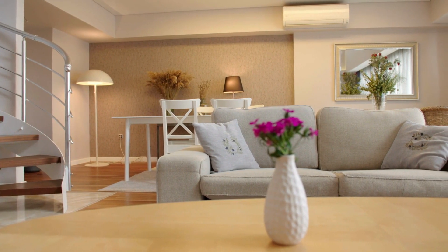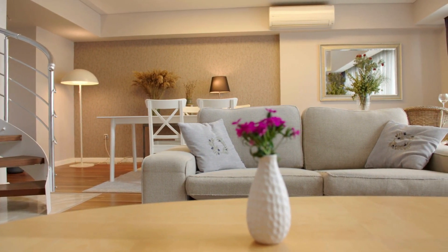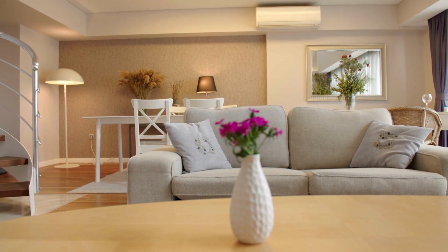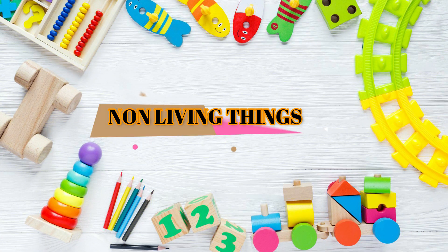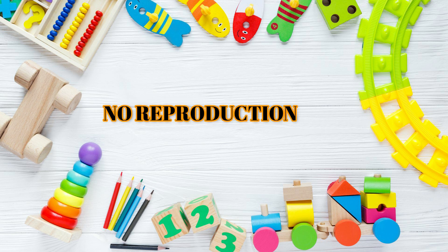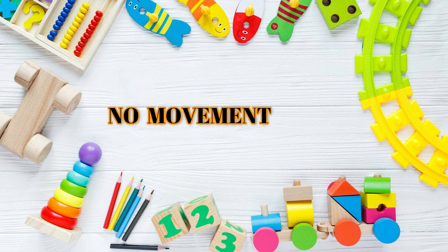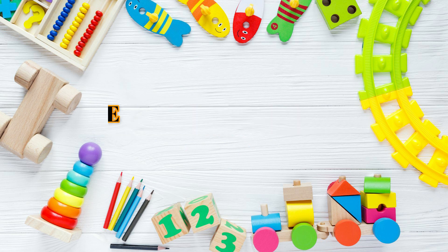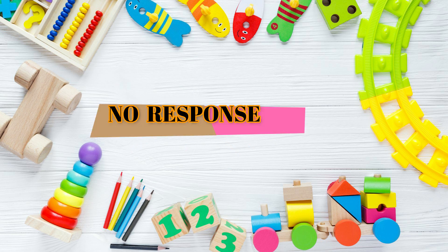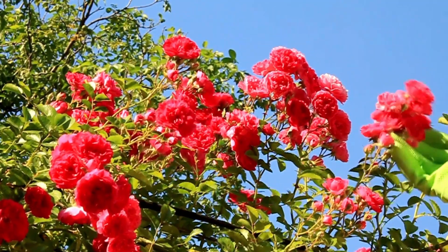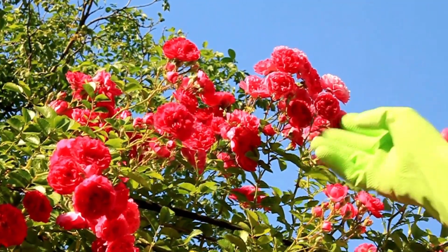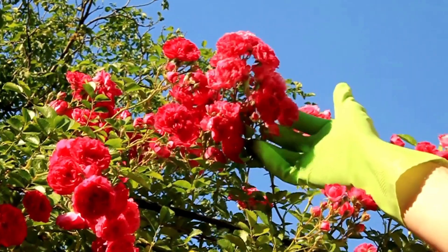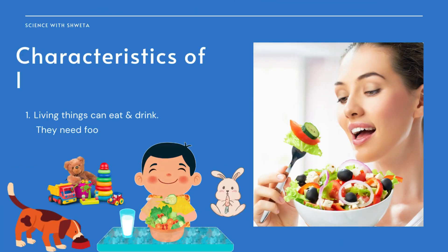Non-living things are those which have stopped displaying the characteristics of life. They lack or no longer display the capability for growth, reproduction, respiration, and movement. They are also not capable of responding to stimulus or evolving and adapting to their environment. Living and non-living things differ in many ways. The first difference is food and water.